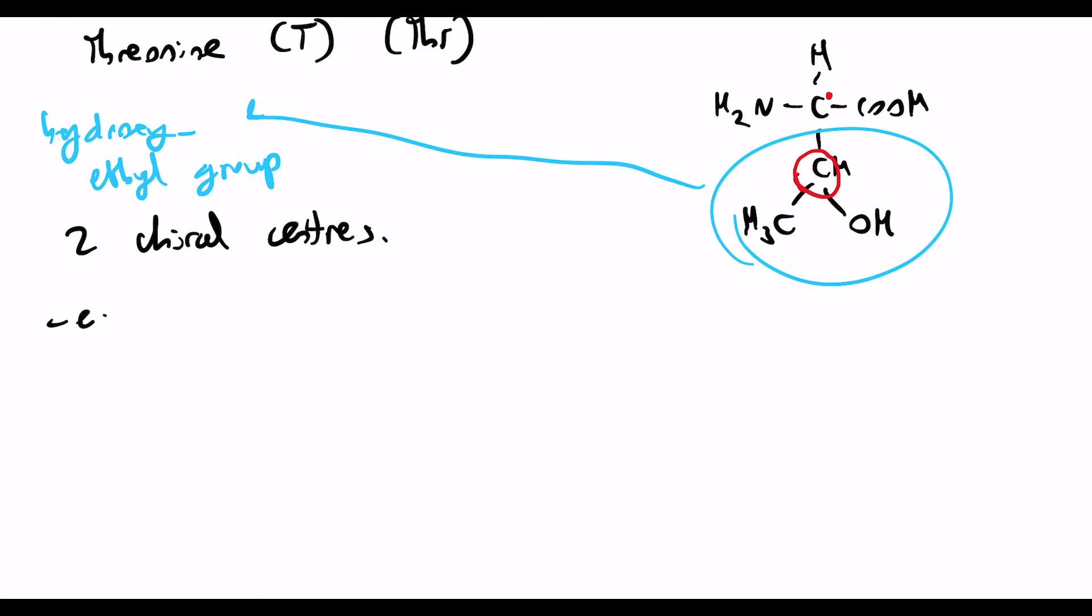Okay, so threonine is an essential amino acid. And I think in most mammals, I think in humans, it's an essential amino acid. But it is possible for it to be synthesized from aspartate. And this happens in E. coli. Something as well is that threonine undergoes phosphorylation a lot.